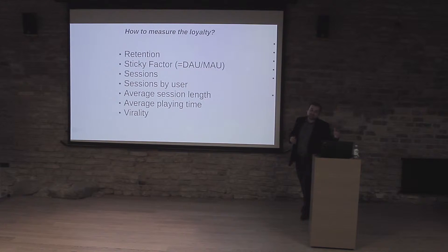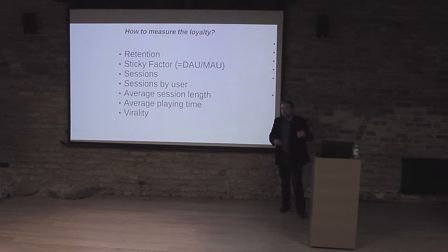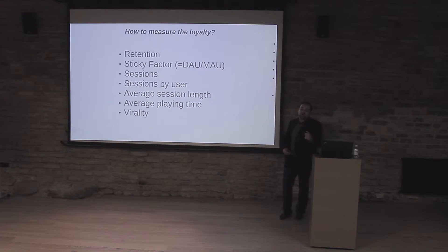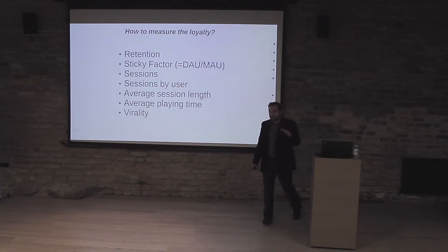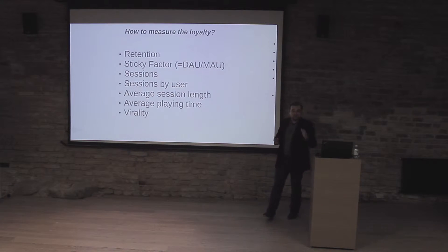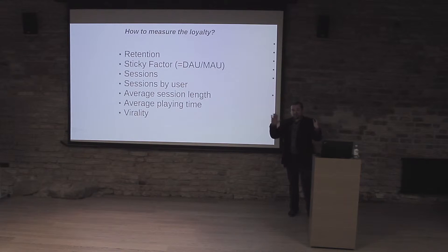In the worst situation, every user visited the application only one time and decided not to return. So if the monthly audience is 1000 people, then daily active users will be equal to about 33 people, and the sticky factor will be equal to 3.3%. So the usual corridor for sticky factor values is from 3% to 100%.